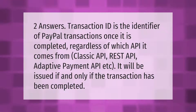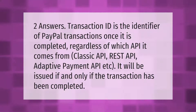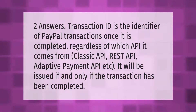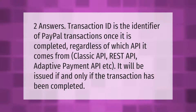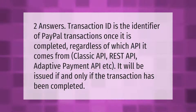A transaction ID is the identifier of PayPal transactions. Once it is completed, regardless of which API it comes from — Classic API, REST API, Adaptive Payment API, etc. — it will be issued if and only if the transaction has been completed.